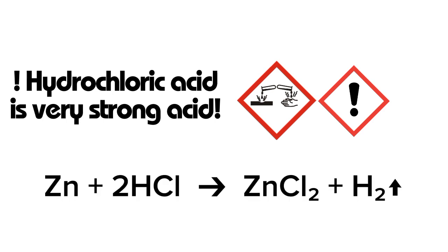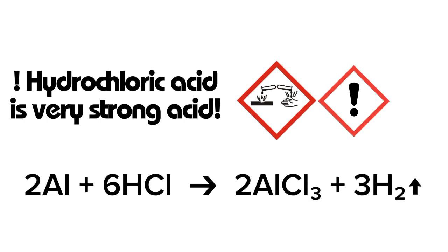When hydrochloric acid reacts with zinc, it produces zinc chloride and hydrogen. When hydrochloric acid reacts with aluminum, it produces aluminum chloride and also hydrogen.